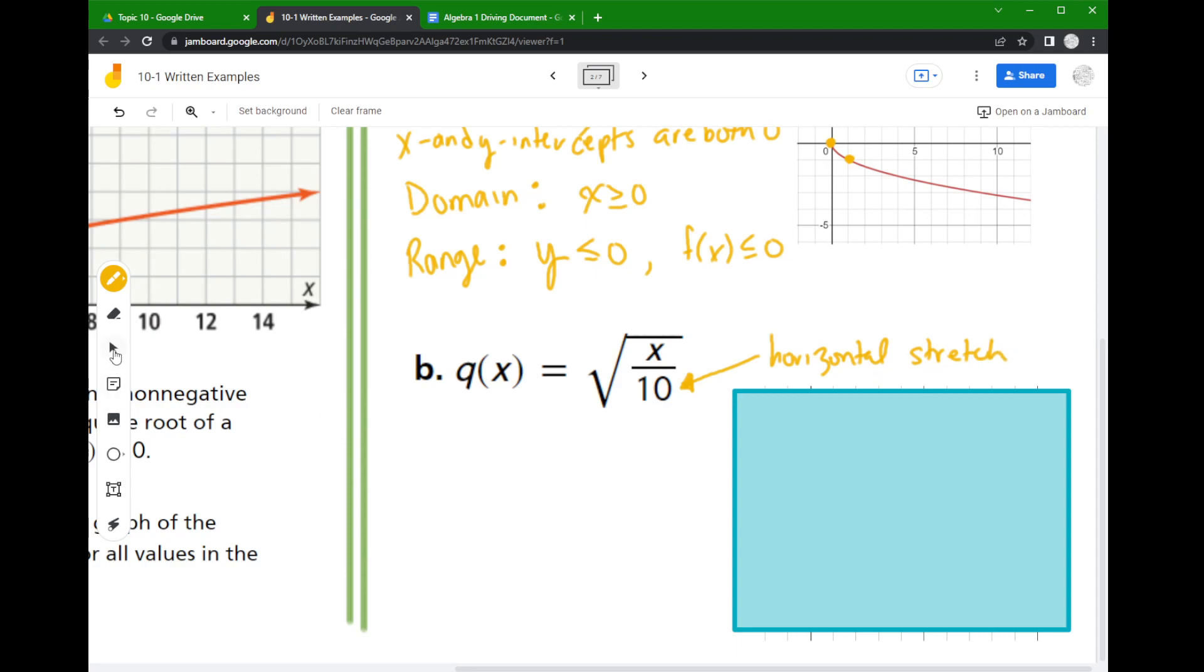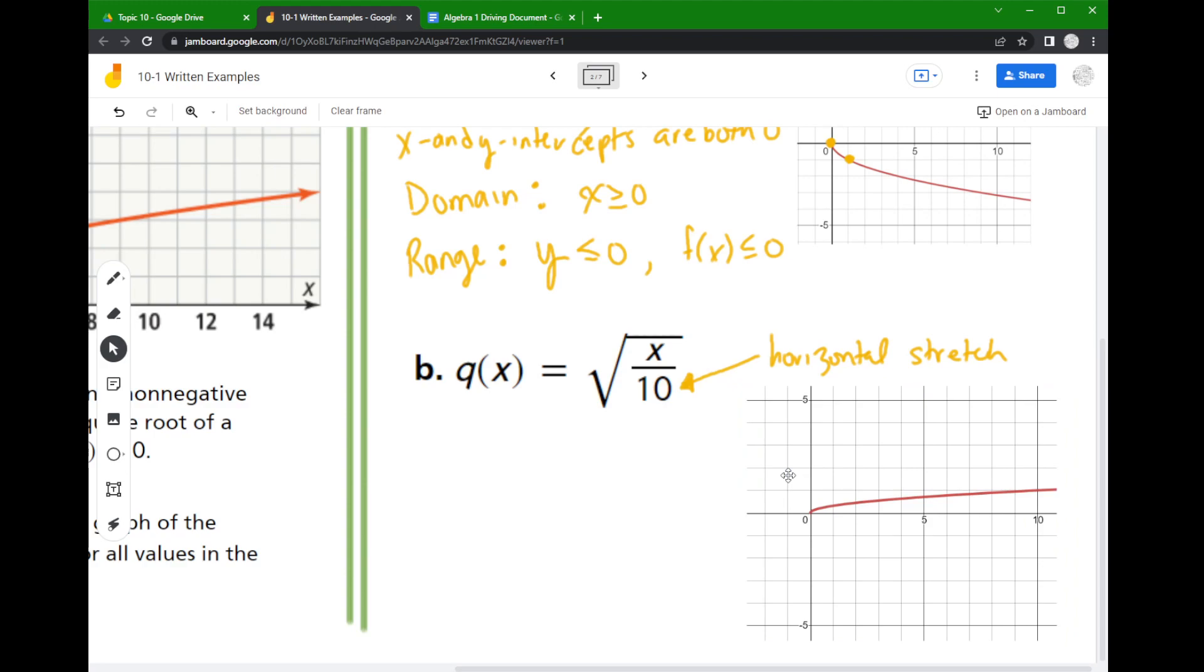So when I delete this graph you're going to notice that it looks like I grabbed the graph on the left and the right and I pulled it apart. That looks very similar to a vertical compression. So it's easy to make those kind of weird understandings of things.